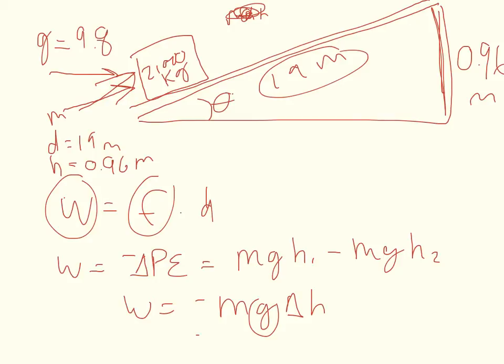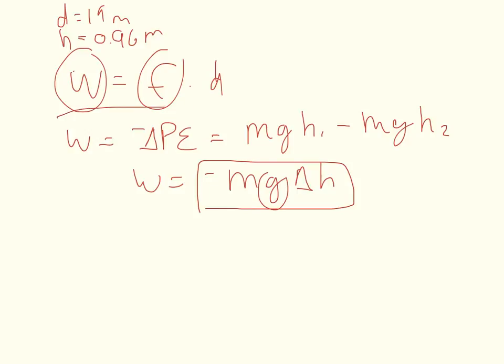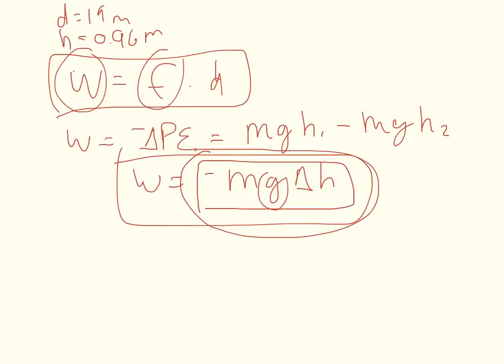So I have enough information now to calculate the work. So how does that help me? Well, I can actually replace, I have an equation for work here. And I have an equation for work here. And I can use substitution law to substitute negative MGH for the work there.